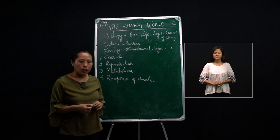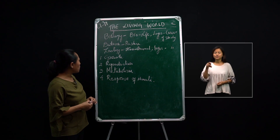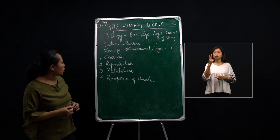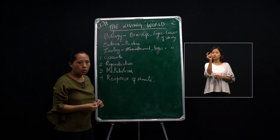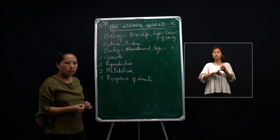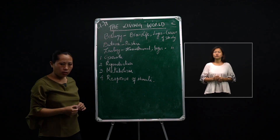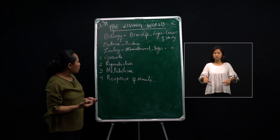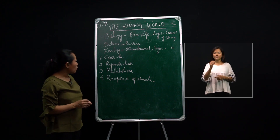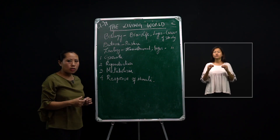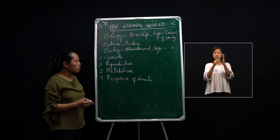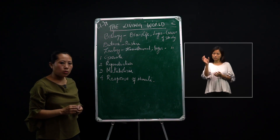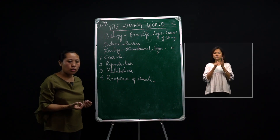Let's see what biology is about. The word biology is derived from two Greek words: bios means life and logos means course of study. Biology is the branch of science which deals with the study of living organisms, and it primarily consists of two branches — botany and zoology. Botany deals with the study of plants and zoology deals with the study of animals.